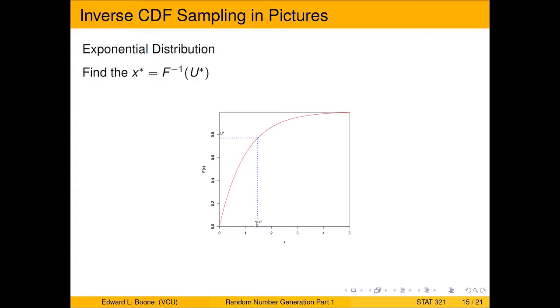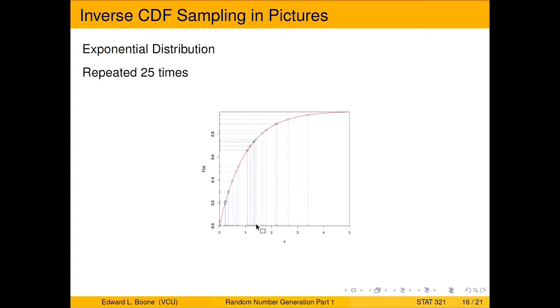Now, like I said, do it multiple times. So if I were to do this multiple times, here's what I would get. So here I did it 25 times, and you can see along this axis I've pulled off uniform variates out of the uniform distribution, brought them over and mapped them back.